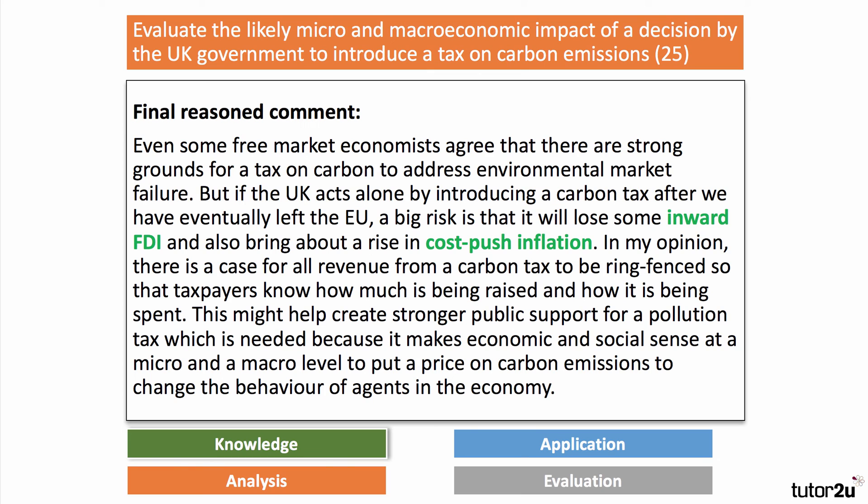To finish with a final reasoned judgment: even though some free market economists argue there are strong grounds for a tax on carbon, if the UK acts alone after leaving the EU, the risk is that we might lose some investment and perhaps cause some extra inflation. In my opinion, there's a case for all revenue from a carbon tax to be ring-fenced so that taxpayers know how much is being raised and, crucially, how it's being spent. That would support greater public acceptance of a tax which, in most economic arguments, makes sense both at a micro and macro level — you need to put a price on carbon to change the behaviour of firms and consumers. That final twist also brings in a element of behavioural economics.